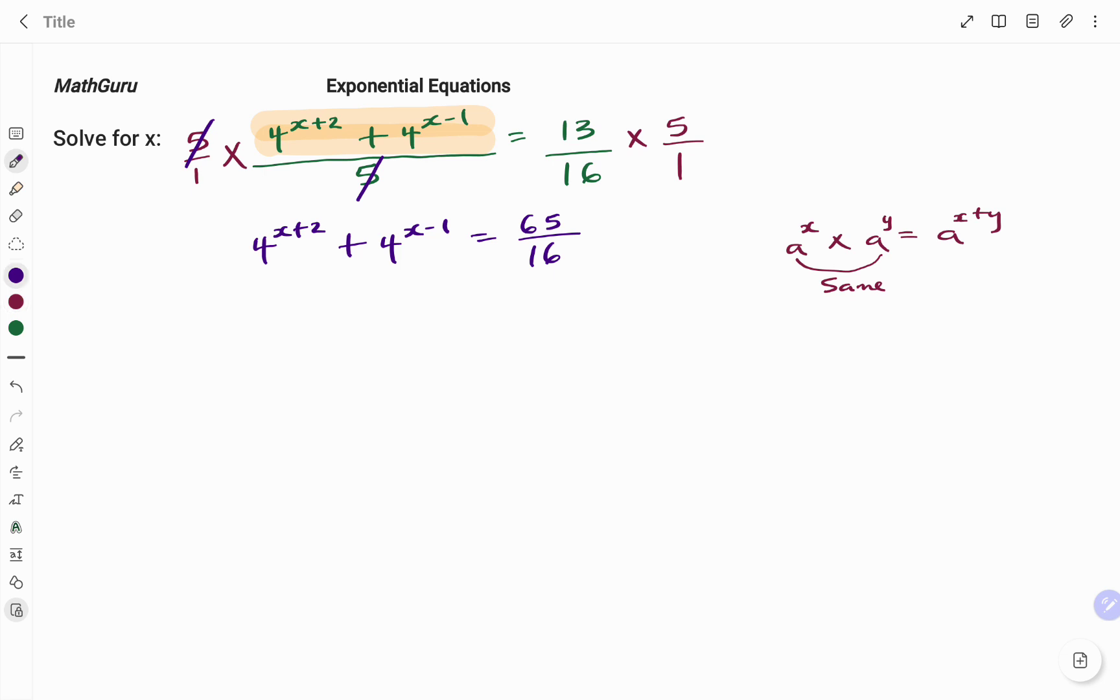So, because I have my 4 to the power of x plus 2, I'm going to break it down as shown. I have that as 4 to the power of x times, my dot is multiplication, 4 to the power of 2, maintaining the same base, plus 4 to the power of x times 4 to the power of negative 1 equals 65 over 16.